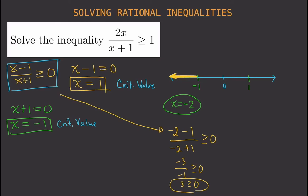We still need to determine if x equals negative 1 itself is part of the solution. Substituting negative 1 gives negative 1 minus 1 over negative 1 plus 1, which is negative 2 over 0. That is undefined, so negative 1 is not part of the solution. Leave it as a hollow circle on the number line.